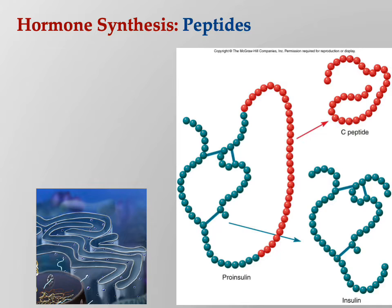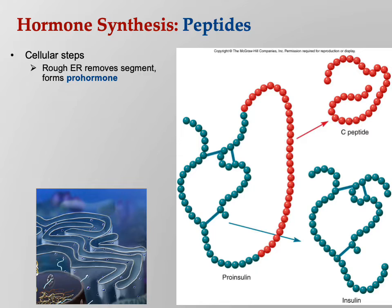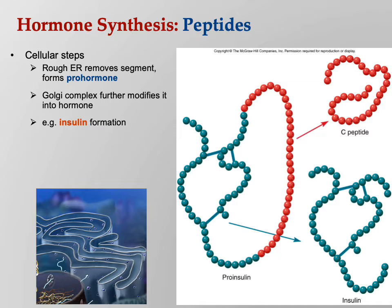Peptides — we've seen before with the plasma proteins made by the liver, the zymogens, the pro-hormones. Over on the right you see pro-insulin; that's an inactive form of insulin. What happens in many cases is we actually cleave off part of it and then the hormone becomes active. That's how you convert a pro-hormone to a hormone. The rough ER removes the segment and forms the pro-hormone, then the Golgi complex further modifies it. That's how insulin is made.